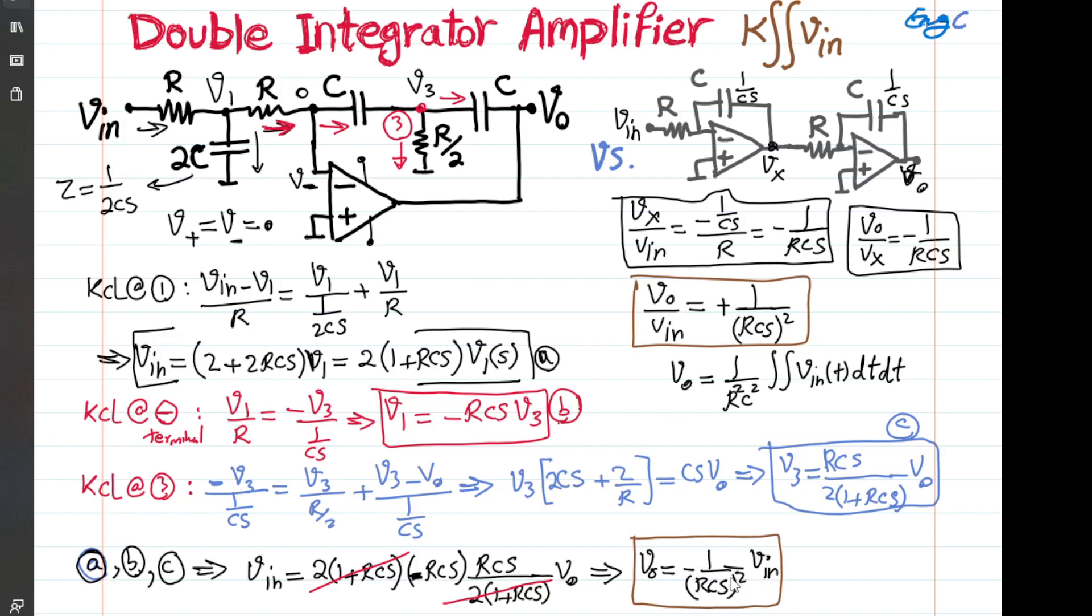But this will realize what we are looking for in time domain as a double integration. So we have negative 1 over RCS squared Vin, which translates to Vout in time domain is just integral. Of course, we should not forget about 1 over R squared CS squared, integral, integral Vin, and then dt squared, double integration, dt dt.